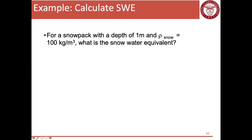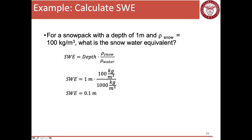As an example, we're going to calculate for a snowpack of depth one meter and an approximate snow density of 100 kilograms per cubic meter — what is the snow water equivalent? Using our equation: SWE equals the depth of the snowpack, one meter, times the density of snow, 100 kilograms per cubic meter, divided by the density of water, 1,000 kilograms per cubic meter, which gives 0.1 meter.